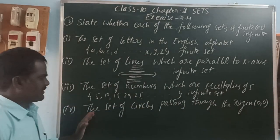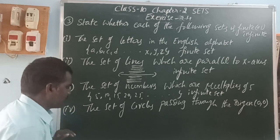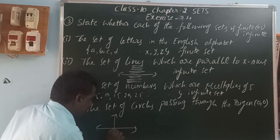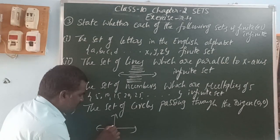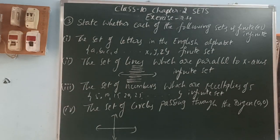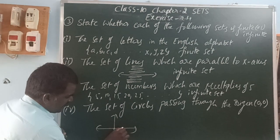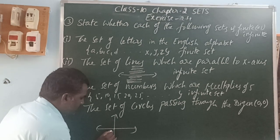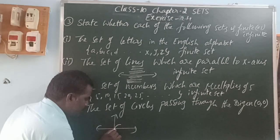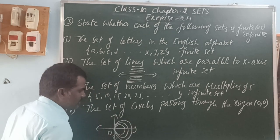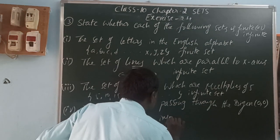Next: the set of circles passing through the origin. On the X-axis and Y-axis, the point is called the origin. From the origin, how many circles can you draw? You can draw infinite circles. So it is an infinite set.